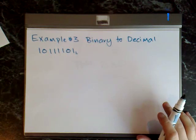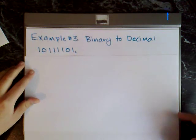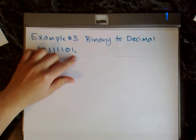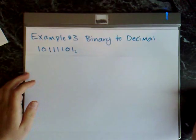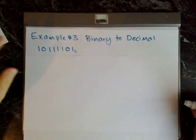Okay so for the last example I'm going to do binary to decimal. And the number I'm using for binary is 10111101 and it's base 2 because binary only has two numbers in its number system and that's 1 and 0.